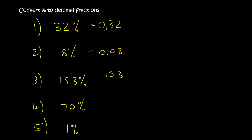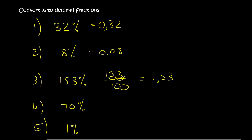153%: step one, divide it by 100. Now your comma is at the back, so you move it twice: 1, 2. And so you end up with 1,53. That's your answer.